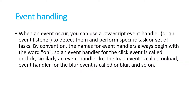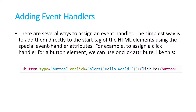In the onclick event handling, we assign a function and then execute it. We can also execute alert functions as well. Adding event handlers is very simple. In this code example, we are using the onclick event in which we have used the alert method of JavaScript, writing 'Hello World' in the string. If somebody clicks on this button, this alert function will be executed and we'll see an alert in the browser.